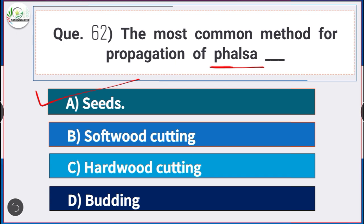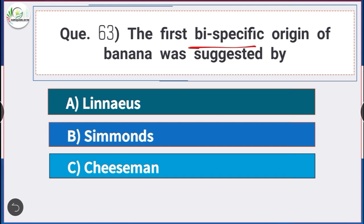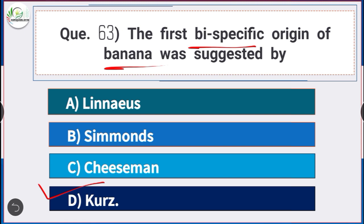Question number 63: The first bi-specific origin of banana was suggested by — answer option D — Simmonds. The first bi-specific origin of banana was suggested by Simmonds.